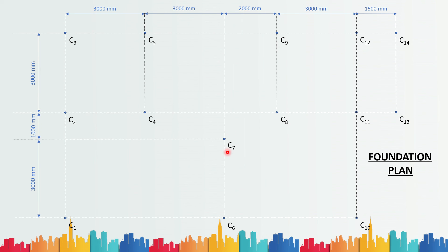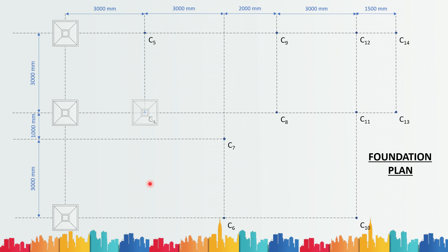Now each column has to be provided with a footing. Since all the columns here are far apart from each other, an isolated sloped footing would be appropriate. For C1, we provide an isolated slope footing. To know the dimensions — as I mentioned, I have already made a video on shallow foundations, please refer to that. The overall outside dimension I am taking here is 1000mm×1000mm and the smaller column dimension is 200mm×200mm. Then for C2, C3, C4, C5 and so on, you keep on drawing the footings for each and every column.